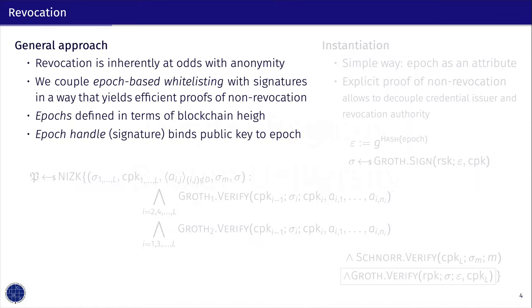Now let's talk about the extensions and improvements we've made to the integration of this scheme with the blockchain. Our first extension is revocation. Classical revocation mechanisms are in conflict with anonymity in general — how can you revoke someone you don't know? What we propose is using epoch-based whitelisting. The idea is to split the timeline into epochs and let identities be valid in an epoch. In the case of blockchain, its height defines the timeline.